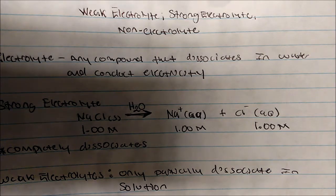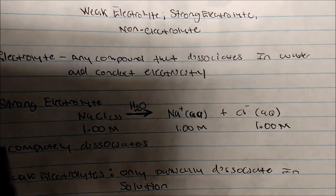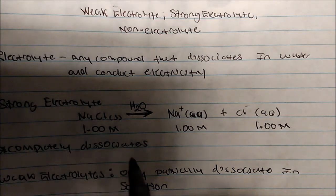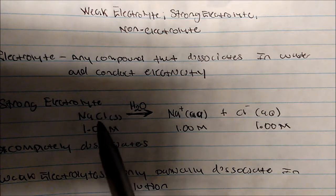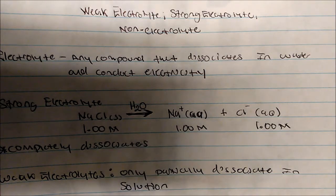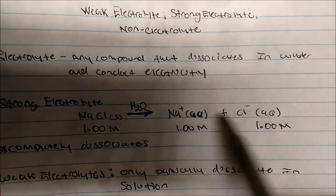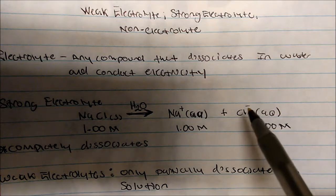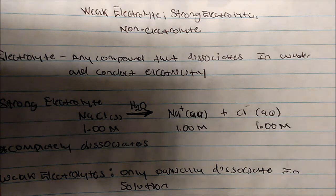Strong electrolytes dissolve completely — they dissociate completely in water. For example, if I take sodium chloride and put it in water, I'll actually get sodium cations and chlorine anions. So this will dissociate completely.